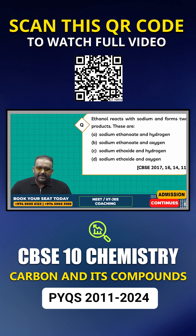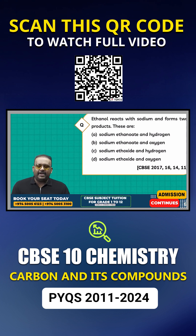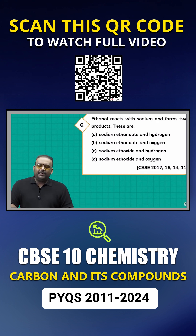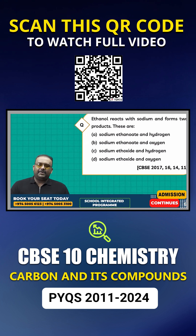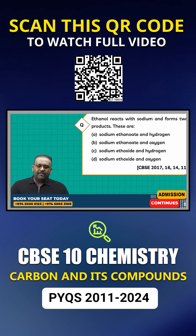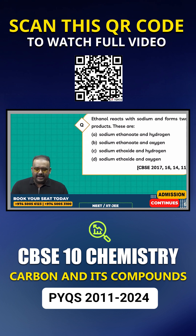This question is asked from the chemical properties of ethanol. In this chapter, two important compounds whose chemical and physical properties need to be covered are ethanol and ethanoic acid.